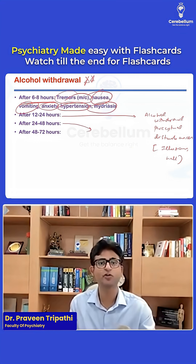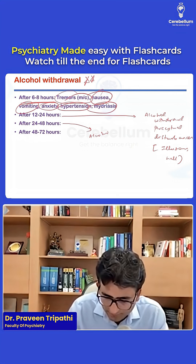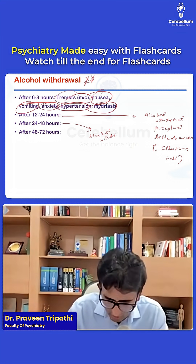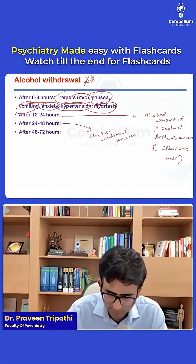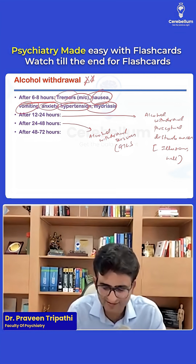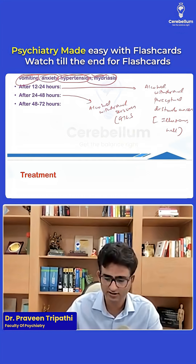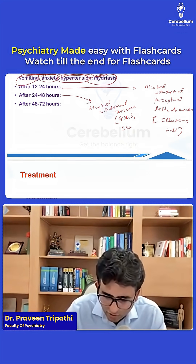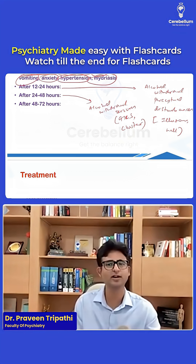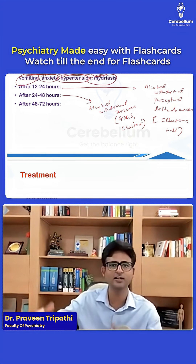After 24 to 48 hours, the patient can develop alcohol withdrawal seizures. They are GTCS — generalized tonic-clonic seizures. They are also called cluster seizures because they come in clusters — one, second, third.